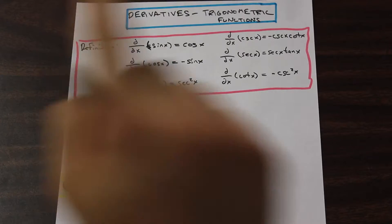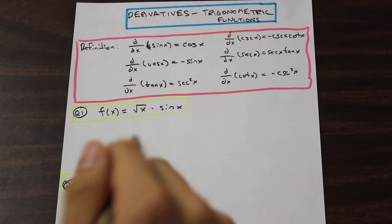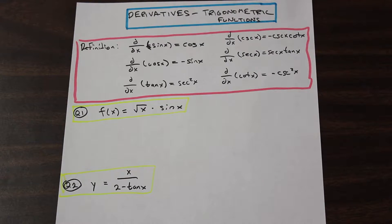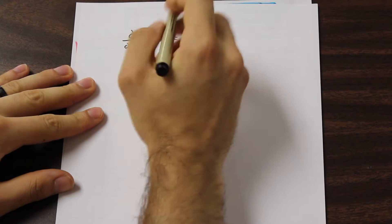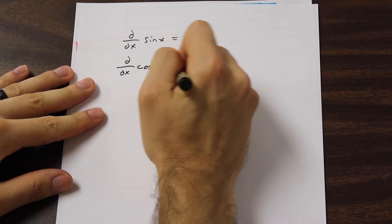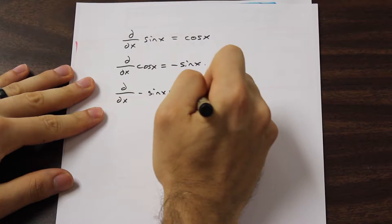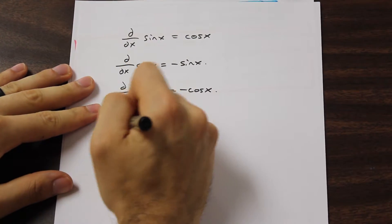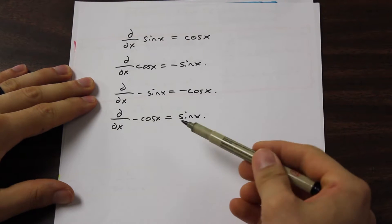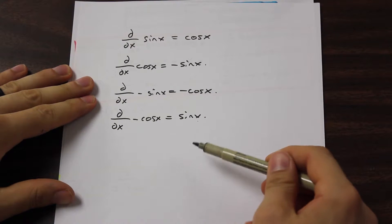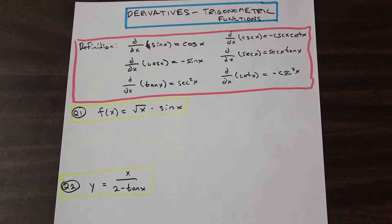Sine and cos are periodic functions — they're waves that continue to go on to infinity, and because of that, the derivatives of them kind of loop. The derivative of sine x is cos x, the derivative of cos x is negative sine x, the derivative of negative sine x is negative cos x, and then we come back to the beginning — negative cos x gives sine x. And that just continues forever. This is a little different from taking the derivatives of, for example, polynomial functions.